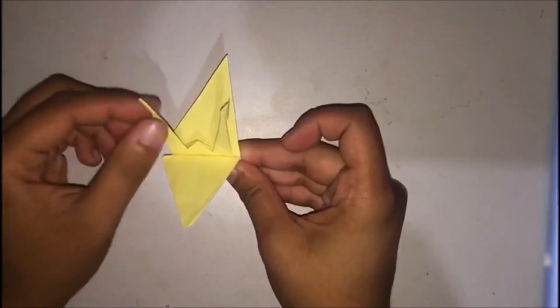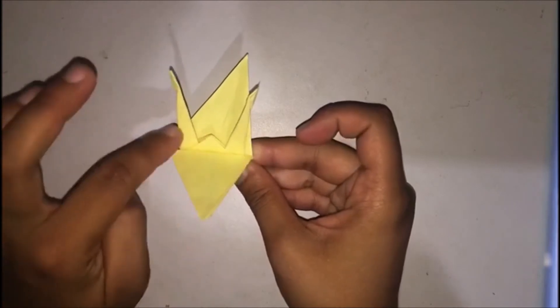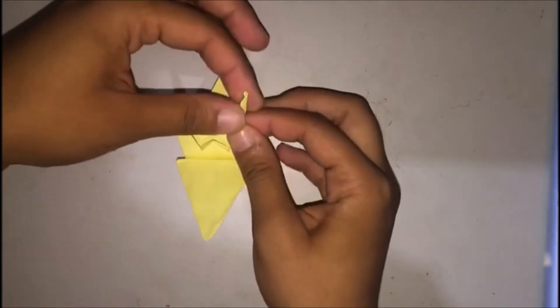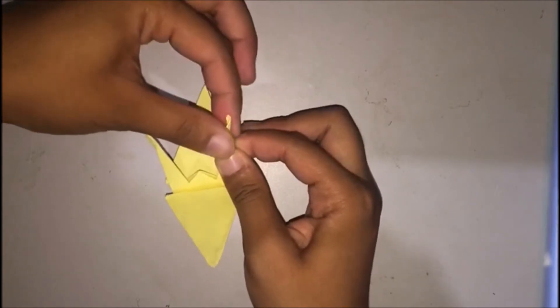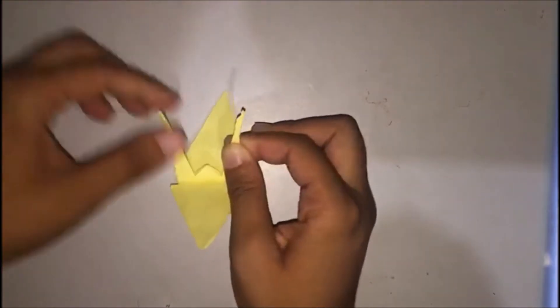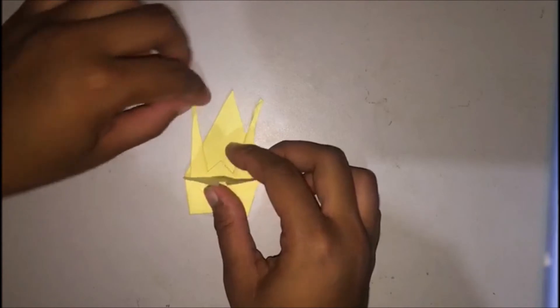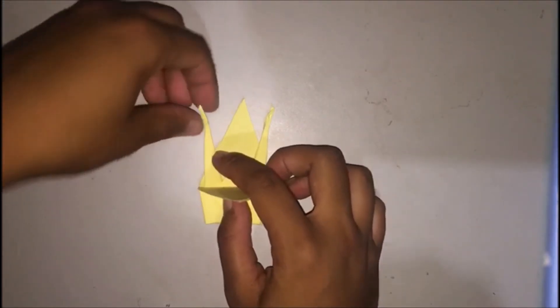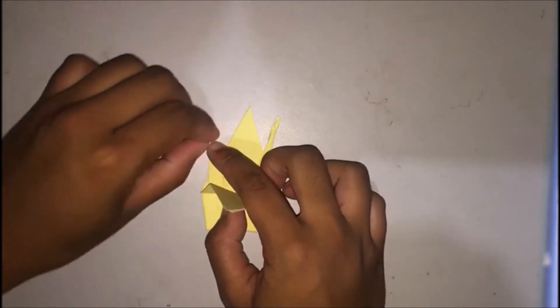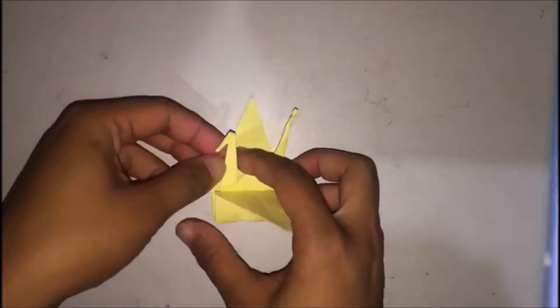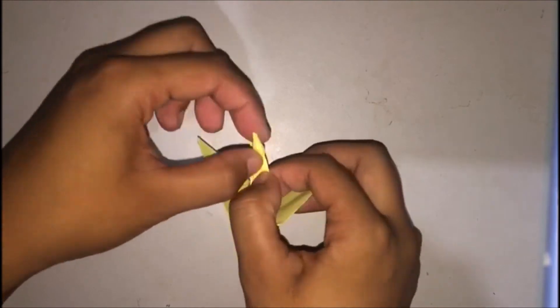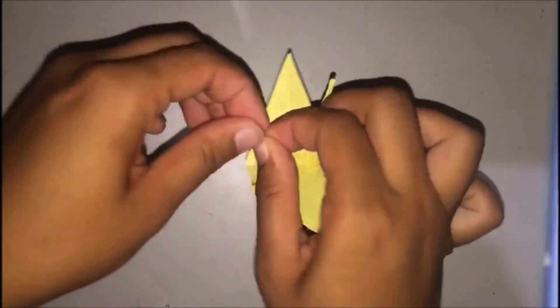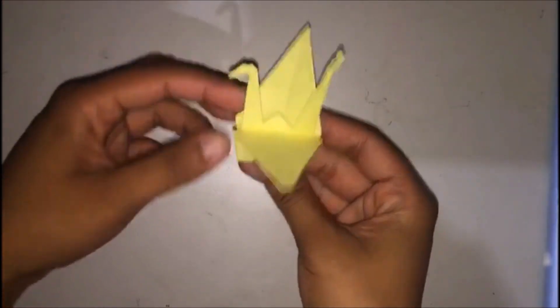From this point, we're going to be making the head. So choose which part you would like to make your head of the crane. I'll just be using this part. And you're going to be doing the reverse folding again. So take this part. Then there you go.